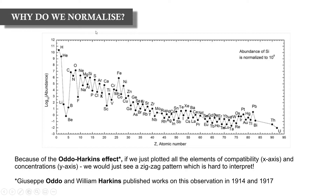So why do we normalize? Normalization is the process of taking the rare earth element concentrations of our sample and dividing them by the concentrations of a known reservoir, such as a chondrite or primitive mantle. We do this because of the Oddo-Harkins effect, first reported by Giuseppe Oddo and William Harkins, who published works on this in 1914 and 1917 respectively.